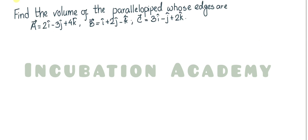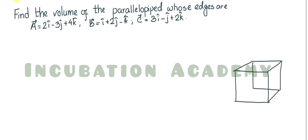These three vectors are given. What is a parallelepiped? A parallelepiped is nothing but a cuboid — it has six faces and 12 sides. Let me draw it first. Here, the sides are representing the three vectors: this is the a vector, this one is the b vector, and that one will be the c vector.